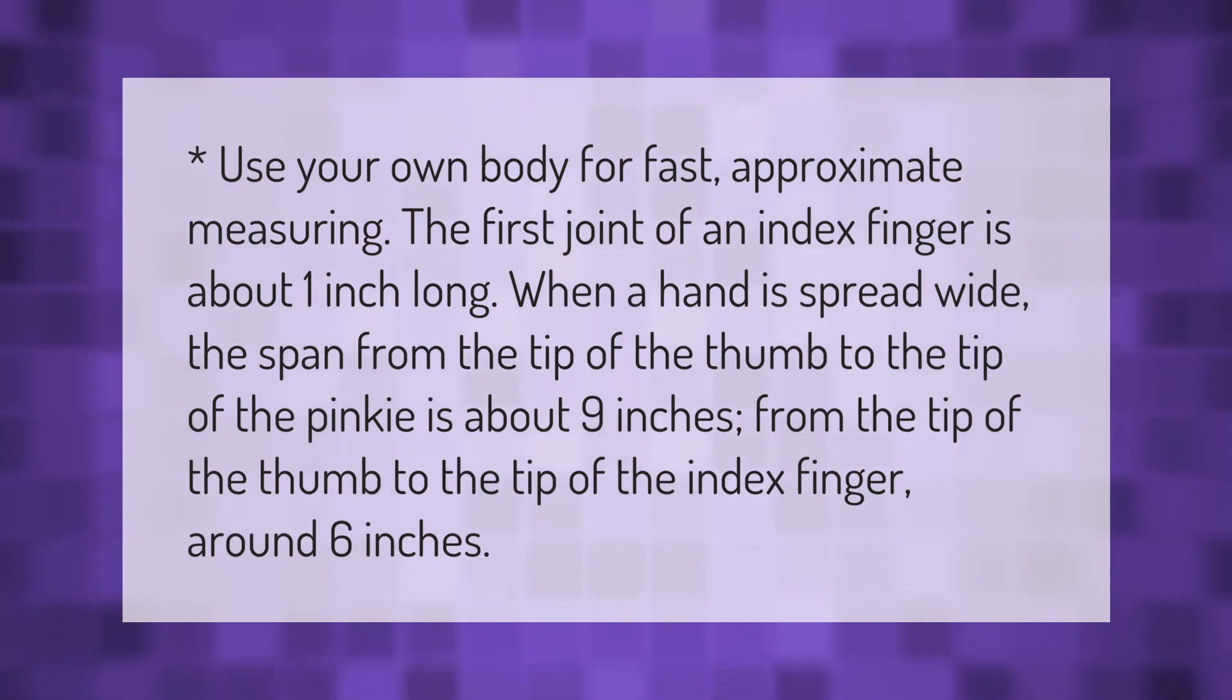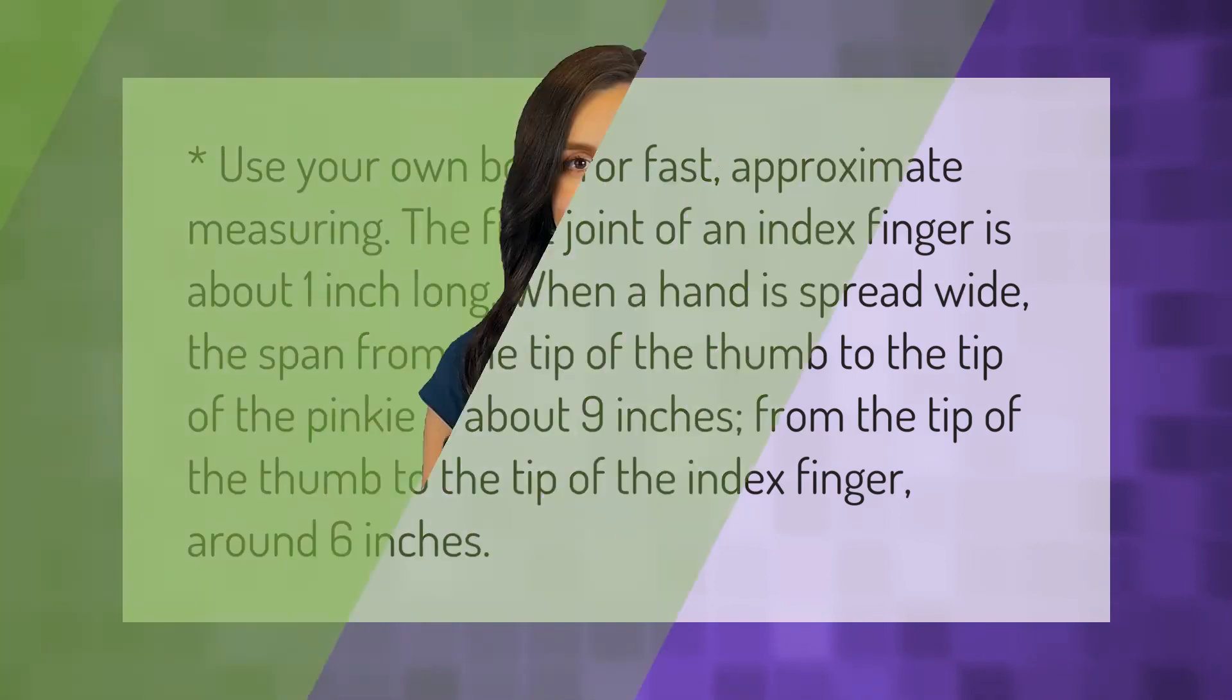Use your own body for fast approximate measuring. The first joint of an index finger is about one inch long. When a hand is spread wide, the span from the tip of the thumb to the tip of the pinky is about nine inches. From the tip of the thumb to the tip of the index finger, around six inches.